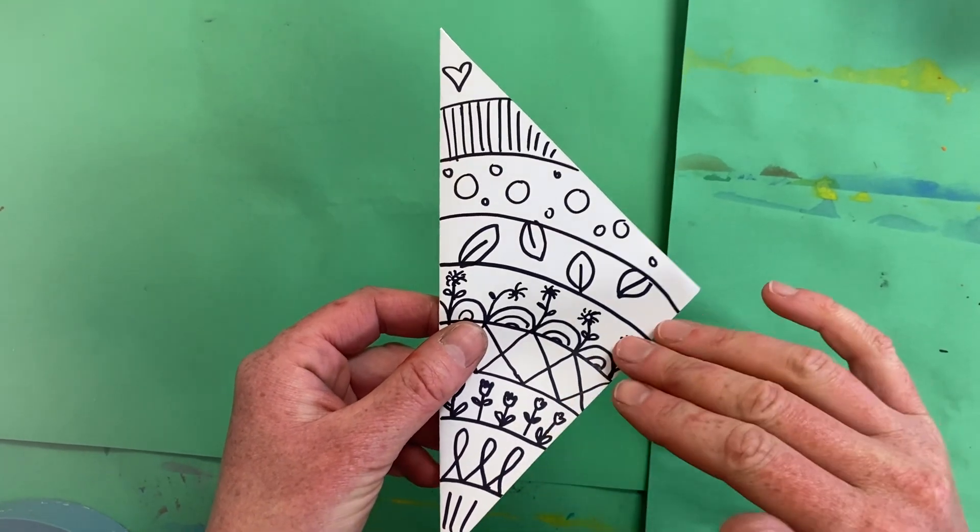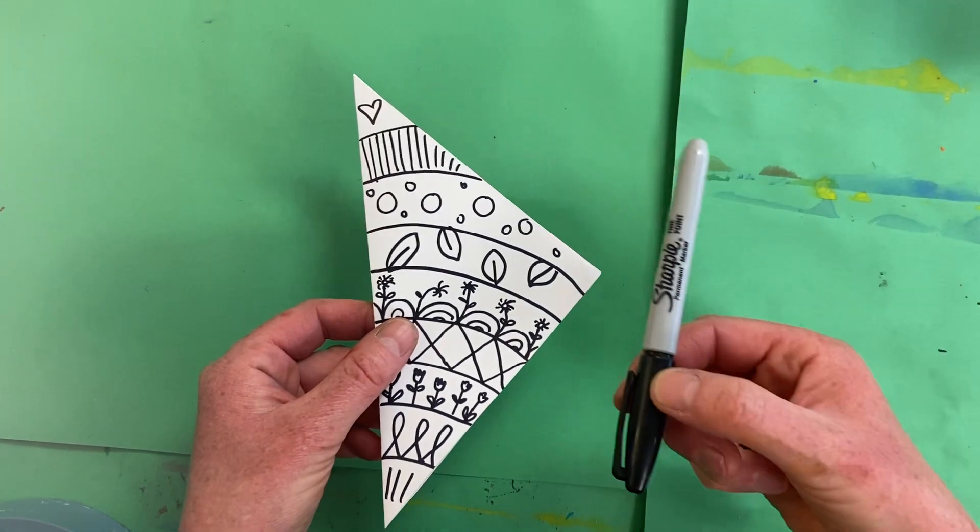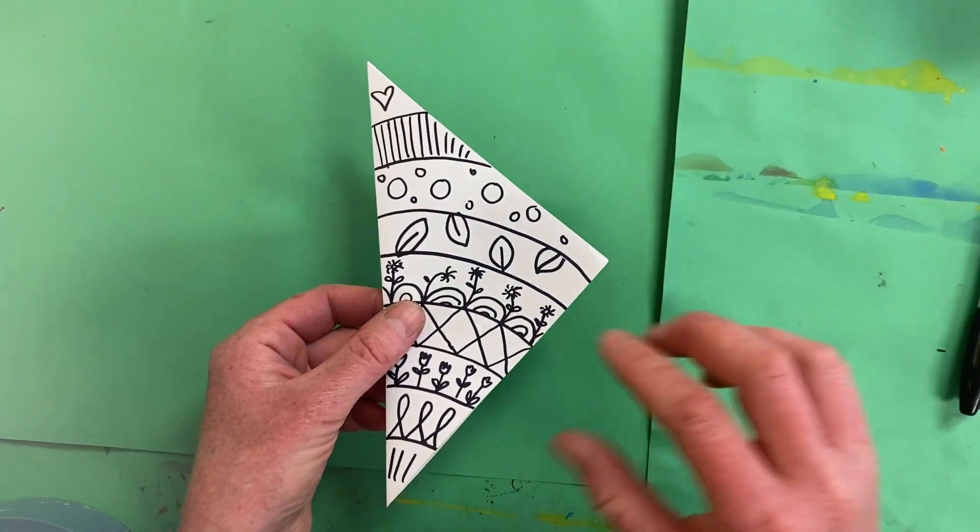After you have finished drawing your design with at least five different patterns, you are going to carry your permanent marker and this to the back of the room to the window.